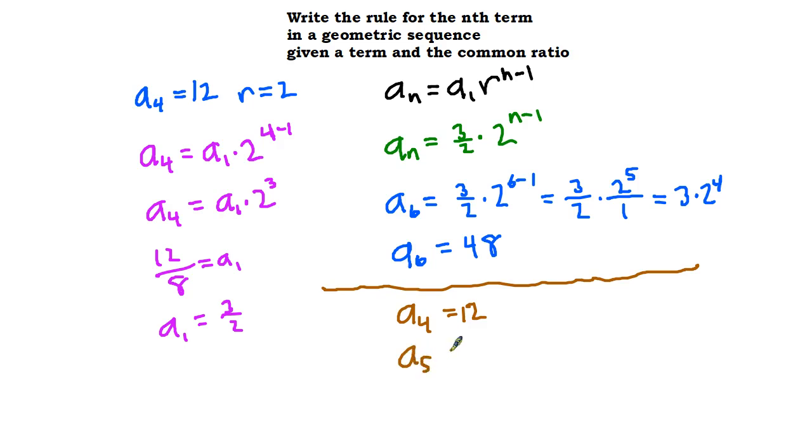So a sub 5 is going to equal 12 times 2, and a sub 6 is just going to equal 12 times 2 times 2.